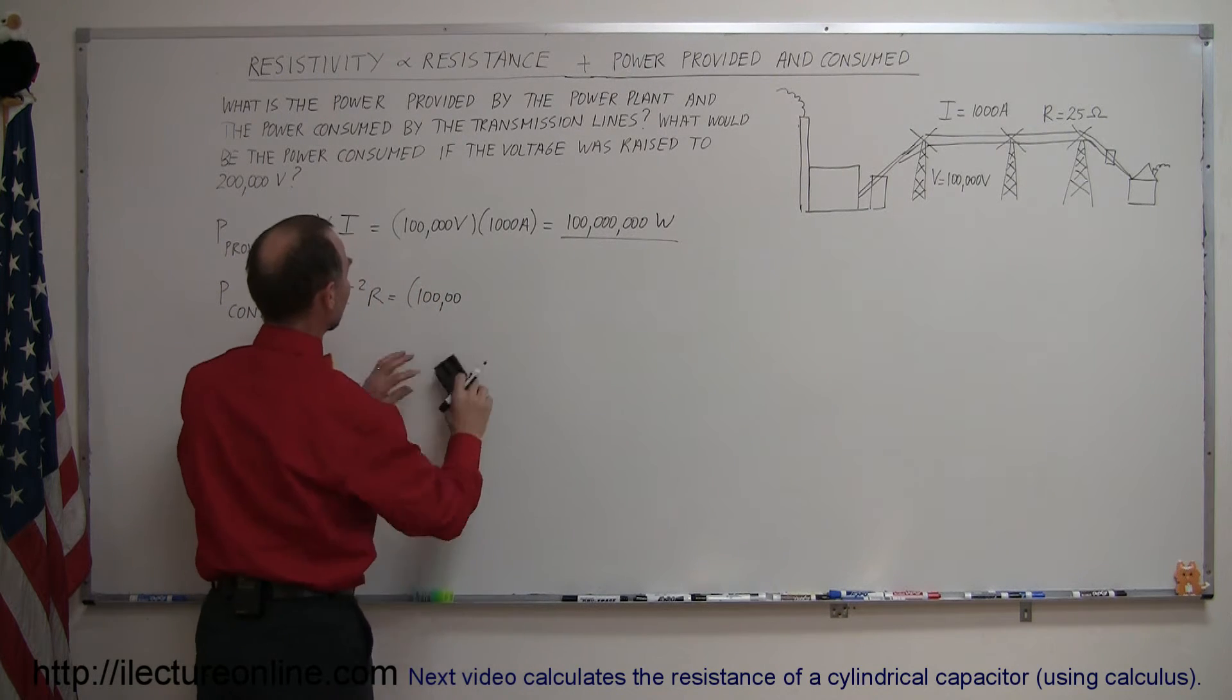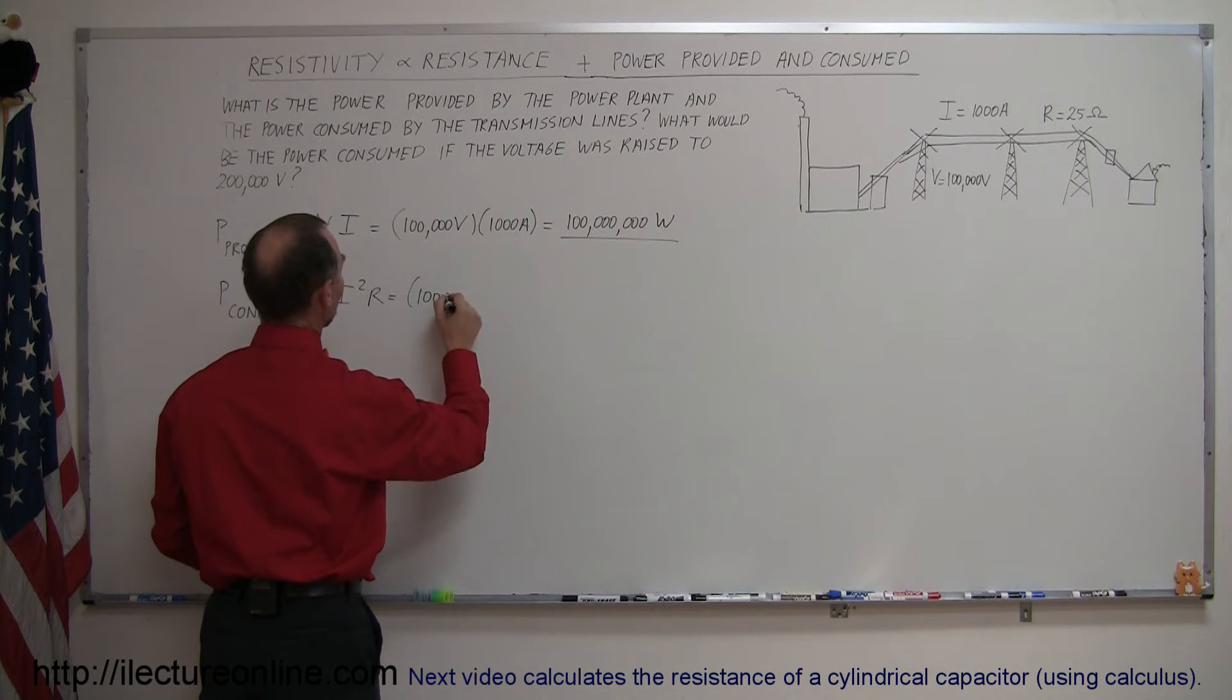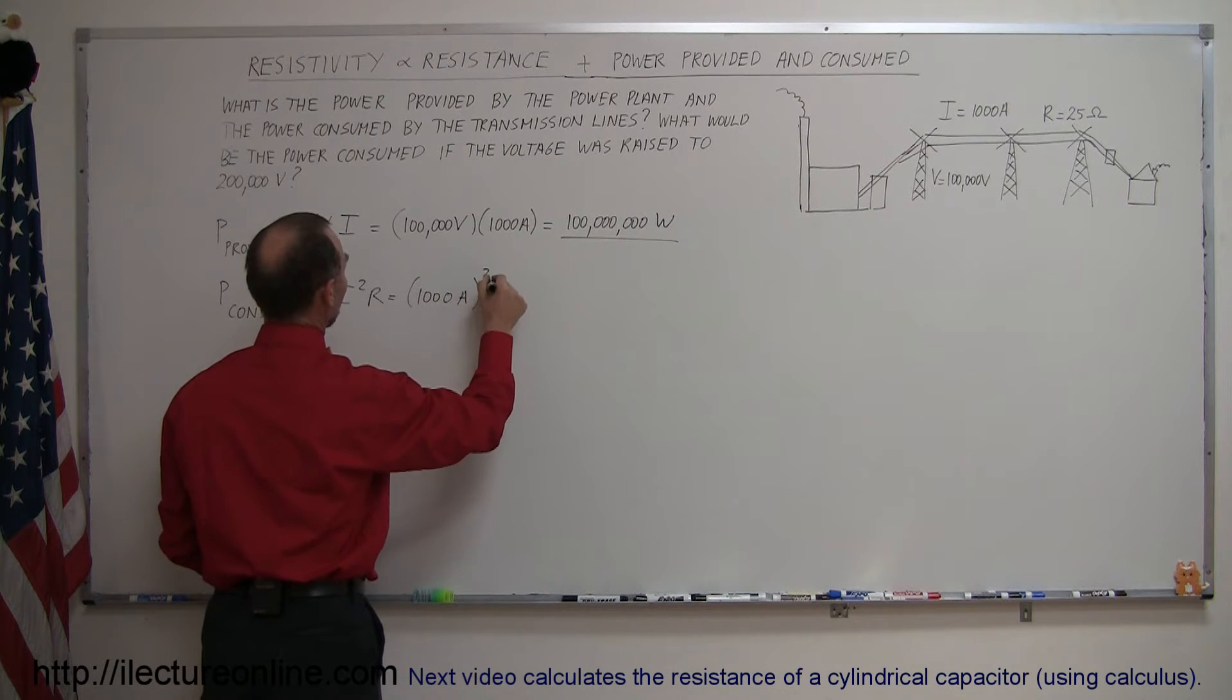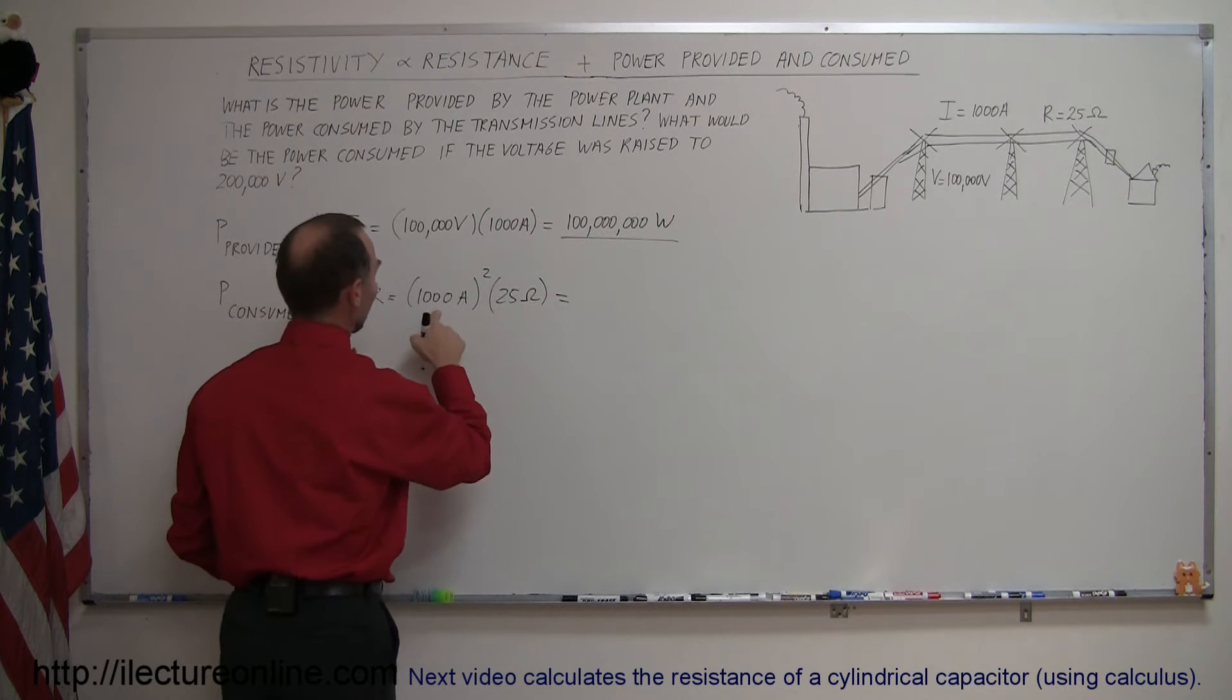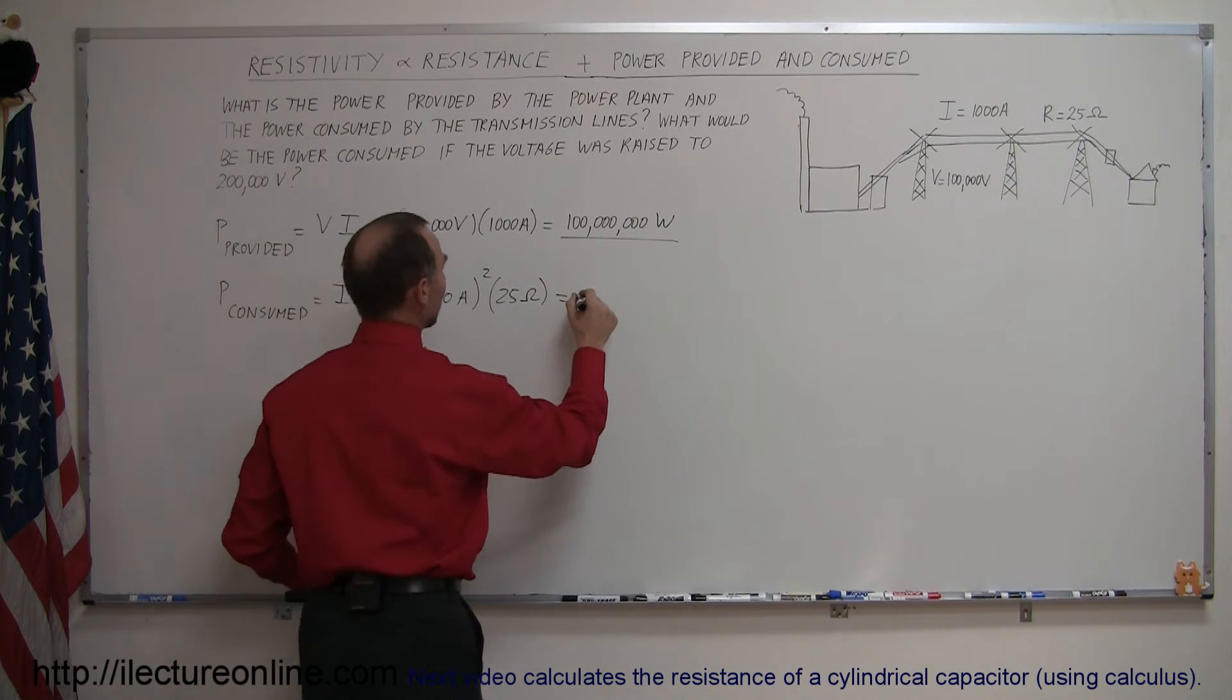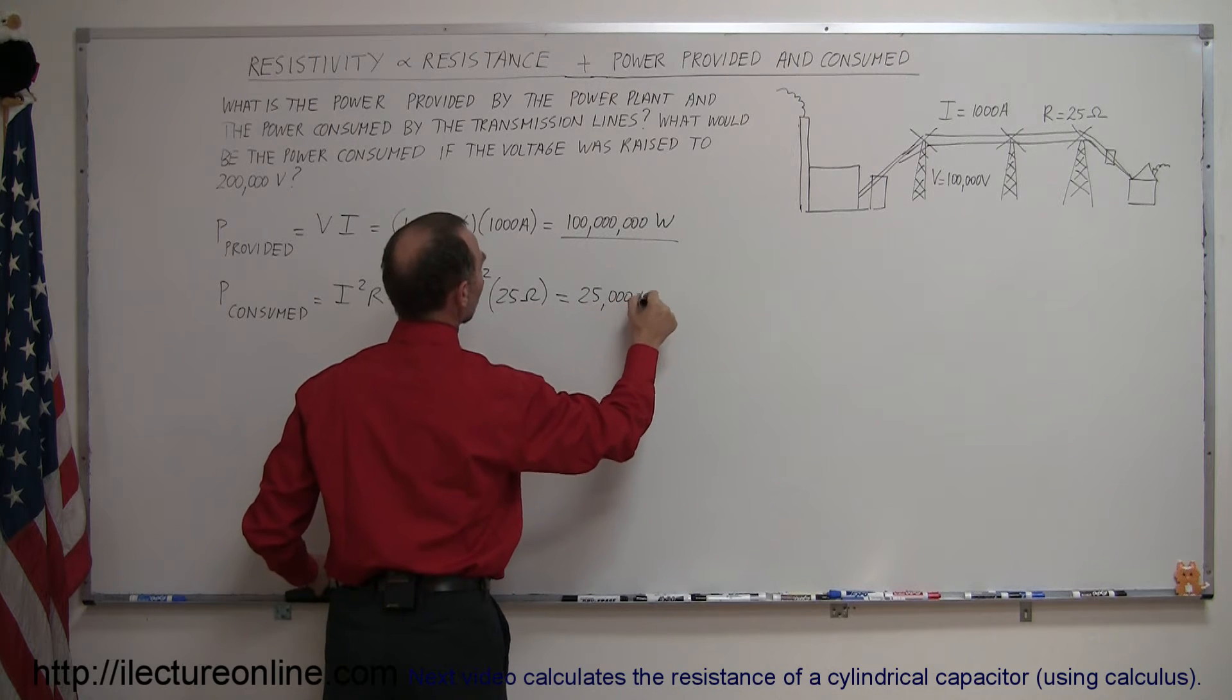A thousand, not a hundred thousand. It's equal to a thousand amps and we have to square that times the resistance of 25 ohms. And so a thousand squared is a million times 25, that would be 25 million watts.